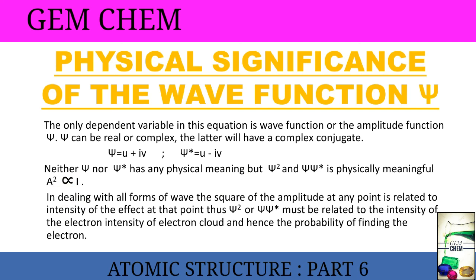As we know, it will give us probability. We know that amplitude squared is directly proportional to intensity. In dealing with all forms of waves, the square of the amplitude at any point is related to intensity of the effect at that point. Thus Ψ² or ΨΨ* must be related to the intensity of the electron cloud and hence the probability of finding the electron. This is the main basic important significance of the wave function.